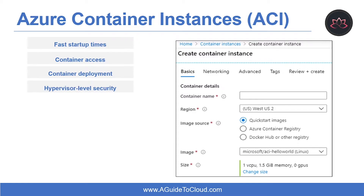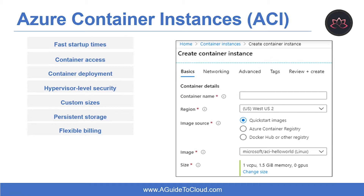The next feature is hypervisor level security. Historically, containers have offered application dependency isolation and resource governance but have not been considered sufficiently hardened for hostile multi-tenant usage. Azure Container Instances guarantees your application is as isolated in a container as it would be in a VM. Another feature is custom sizes — ACI provides optimum utilization by allowing exact specification of CPU cores and memory. You also get persistent storage: to retrieve and persist state with ACI, Microsoft offers direct mounting of Azure File Shares backed by Azure Storage. Another great feature is flexible billing, which supports per GB, per CPU, or per second billing, so you can choose which one you want.